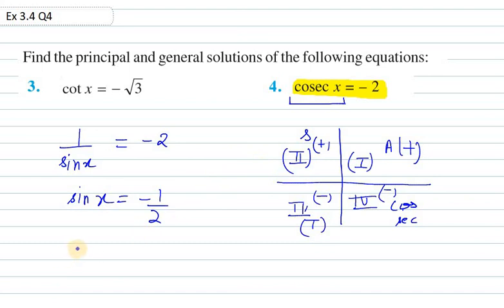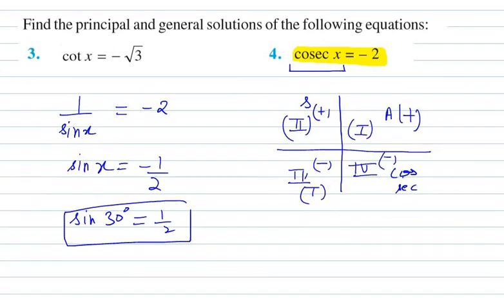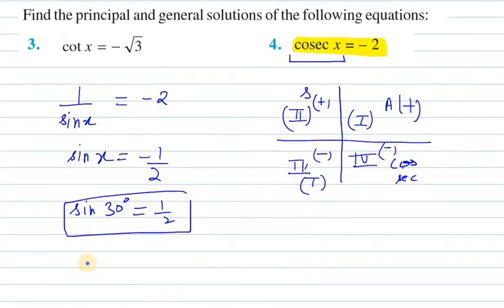We know that sin 30 degree is half. So therefore x value is 30 degree. Theta is 30 degree in this case.